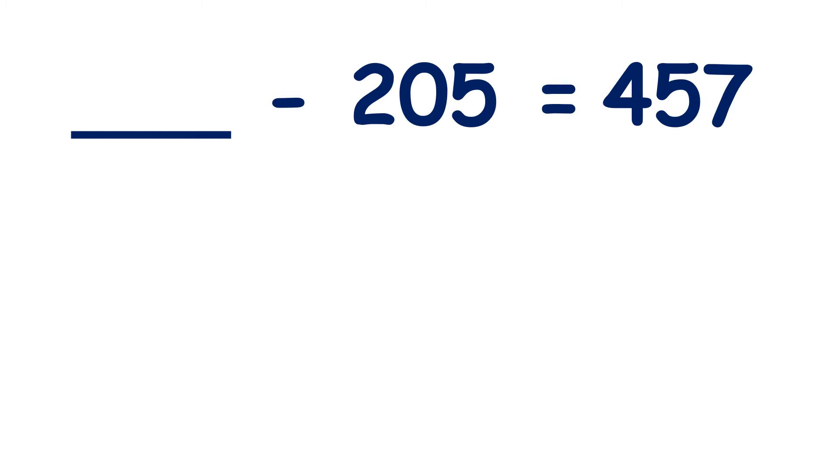Now we have something minus 205 equals 457. So with a number family triangle, we know that if we subtract a bottom number from a top number, we get the other bottom number. But we want to find out what this top number is. So what can we do?